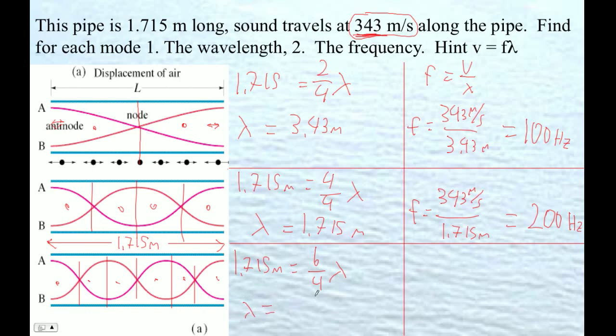Well, 1.715 times four divided by six, 1.14333 repeating meters. The frequency is going to be 343 meters per second divided by 1.143 repeating. So 343 divided by the answer I just got is exactly 300 hertz.